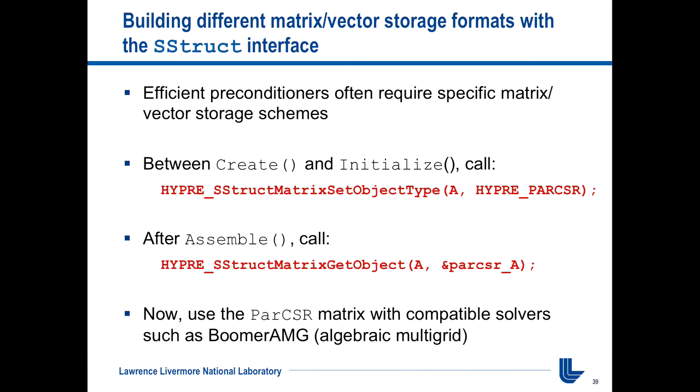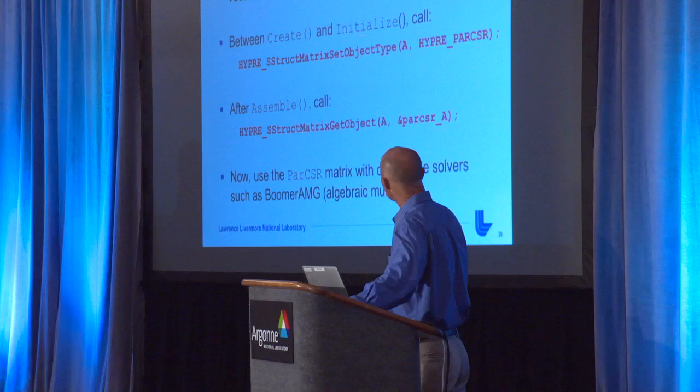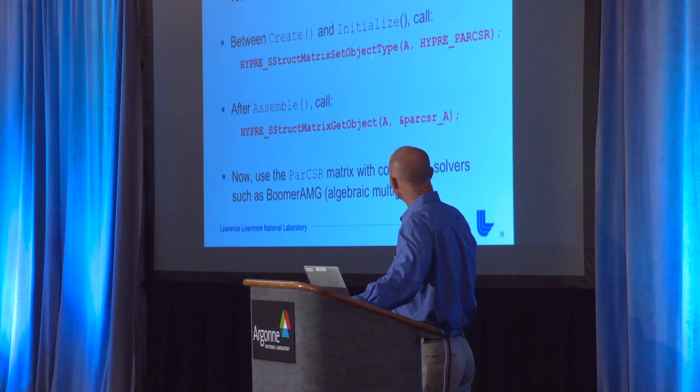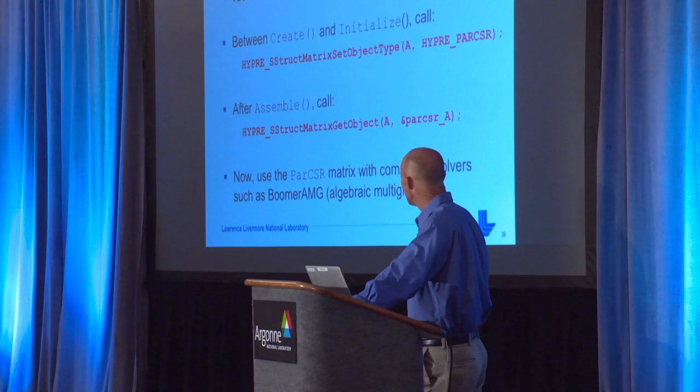With the semi-structured interface, you can also change the underlying matrix storage format by adding just two calls to your code. Between the create and initialize for the matrix, you make a set object type call to say you want to store it as a compressed sparse row matrix. After assembly, you can get that CSR matrix out and call something like BoomerAMG — without having to change all the complications of the interface calls for setting the coefficients themselves.